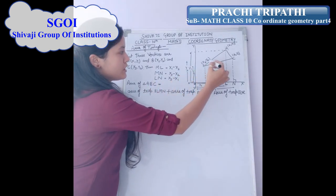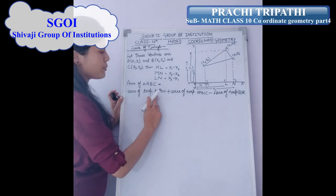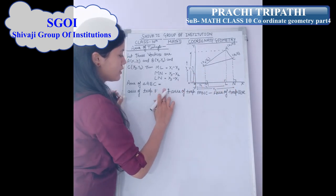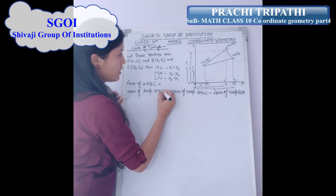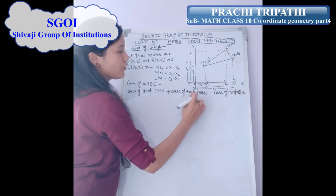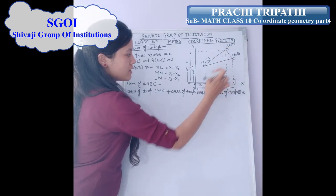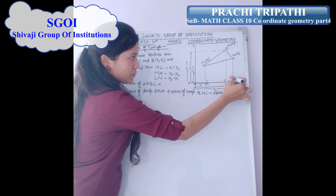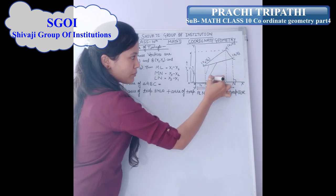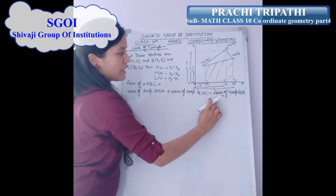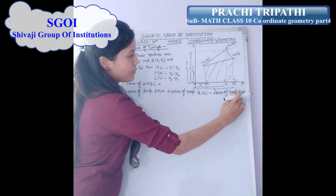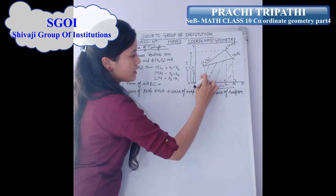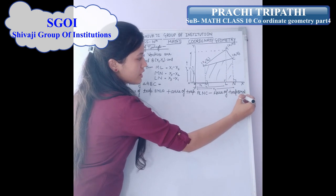Now the area of triangle ABC is equal to area of trapezium BMNA plus area of trapezium ANNC minus area of trapezium BMNC.